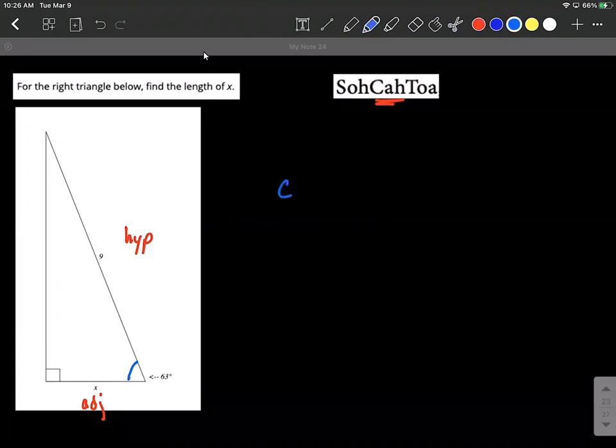So we can set up the cosine of 63 degrees is going to be the adjacent over the hypotenuse.